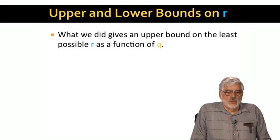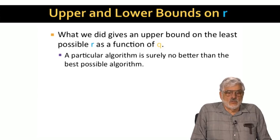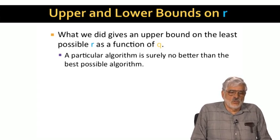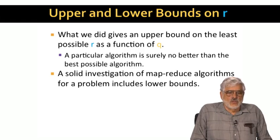What we saw so far can be interpreted as an upper bound on the best possible replication rate for any reducer size. In general, when we give an algorithm and analyze its replication rate in terms of Q, we get an upper bound on the smallest possible R for that Q. Surely the smallest R cannot be greater than the actual R we get from the algorithm. However, to really understand MapReduce algorithms, we need to find lower bounds on R as a function of Q as well.